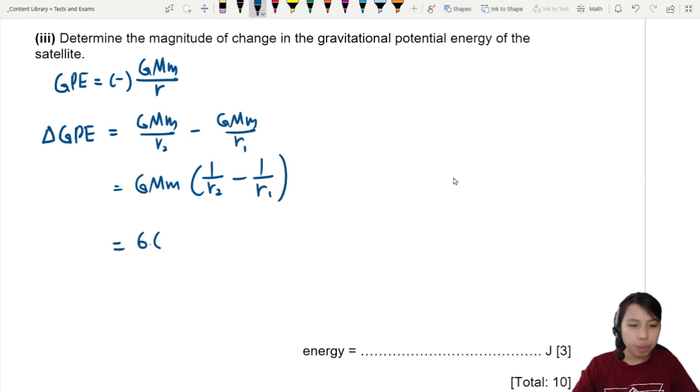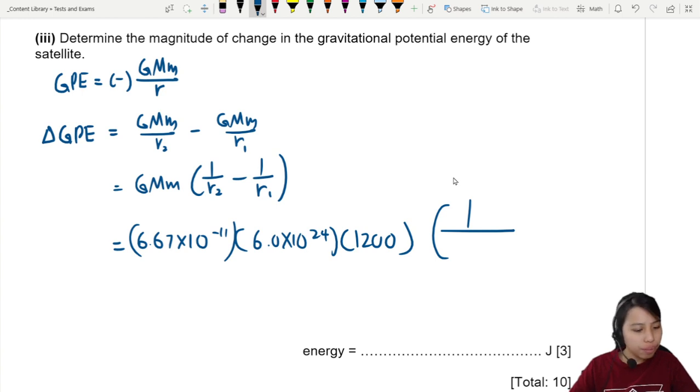Here will be 6.67 times 10 to the negative 11, mass of Earth 6 times 10 to the 24, mass of the satellite 1200. Radius: 1 over the final one, 9.4 times 10 to the 6, minus 1 over 6.9 times 10 to the 6.